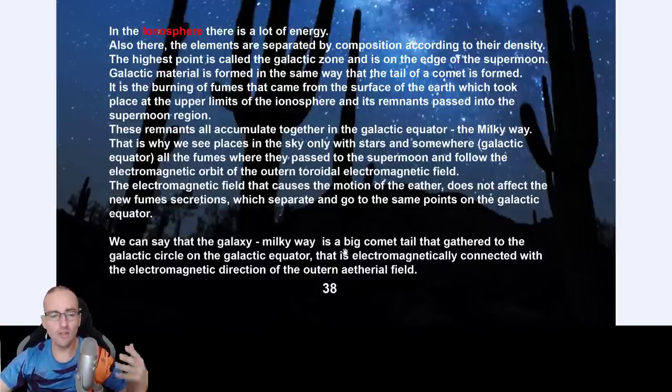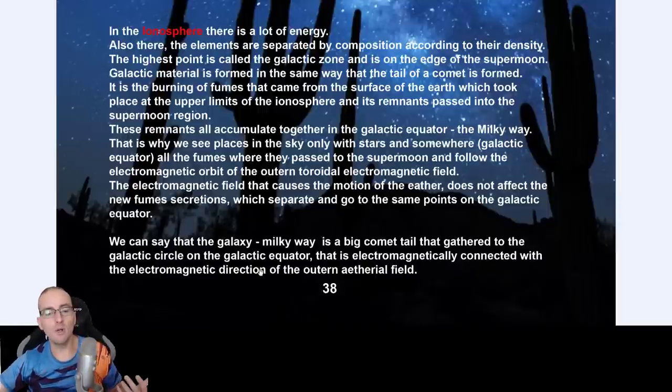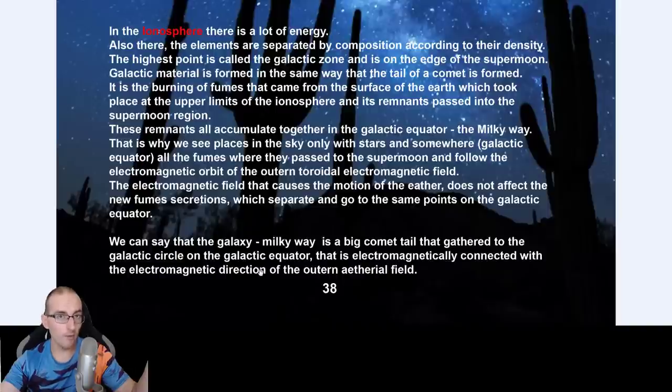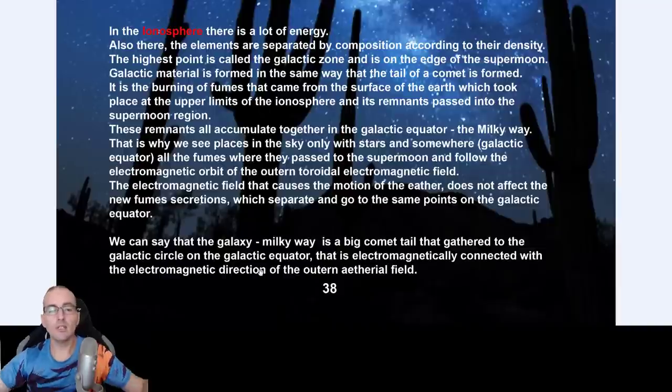We can say that the galaxy, the Milky Way, is a big comet tail that gathered to the galactic circle on the galactic equator, that is electromagnetically connected with the electromagnetic direction of the outer ethereal field. Even though this sounds like Chinese for some of you, once you understand that we live in a closed environment, pretty much like a greenhouse if you want to understand it—that's why we have this whole thing about the temperatures rising and falling—and everything is electromagnetic, everything is electromagnetism and density.